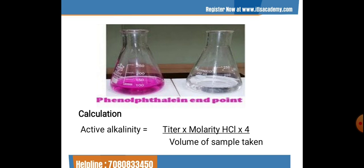As soon as we drop the phenolphthalein indicator into the given sample, the solution turns pink. When titration starts, after some time the point is attained when all the pink color disappears — that is our endpoint. This diagram shows the phenolphthalein endpoint. The disappearance of pink indicates that all the component being analyzed has completely reacted, which is why we get a transparent, colorless solution.